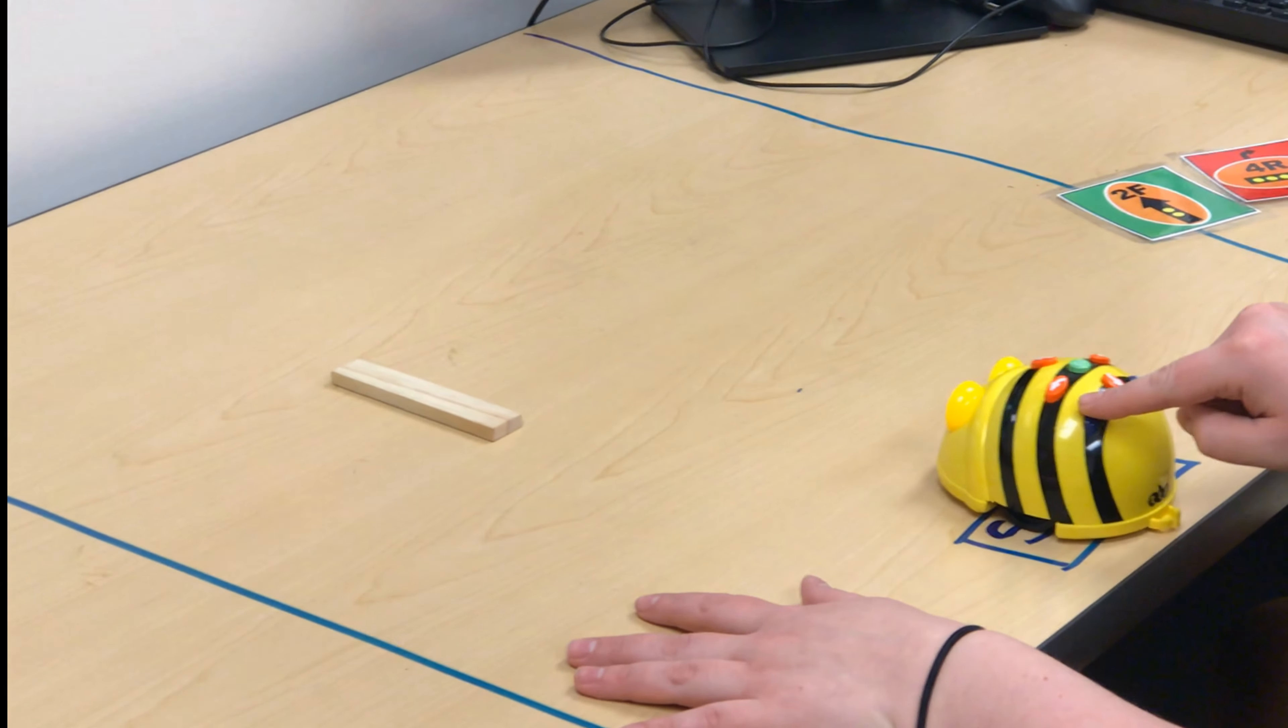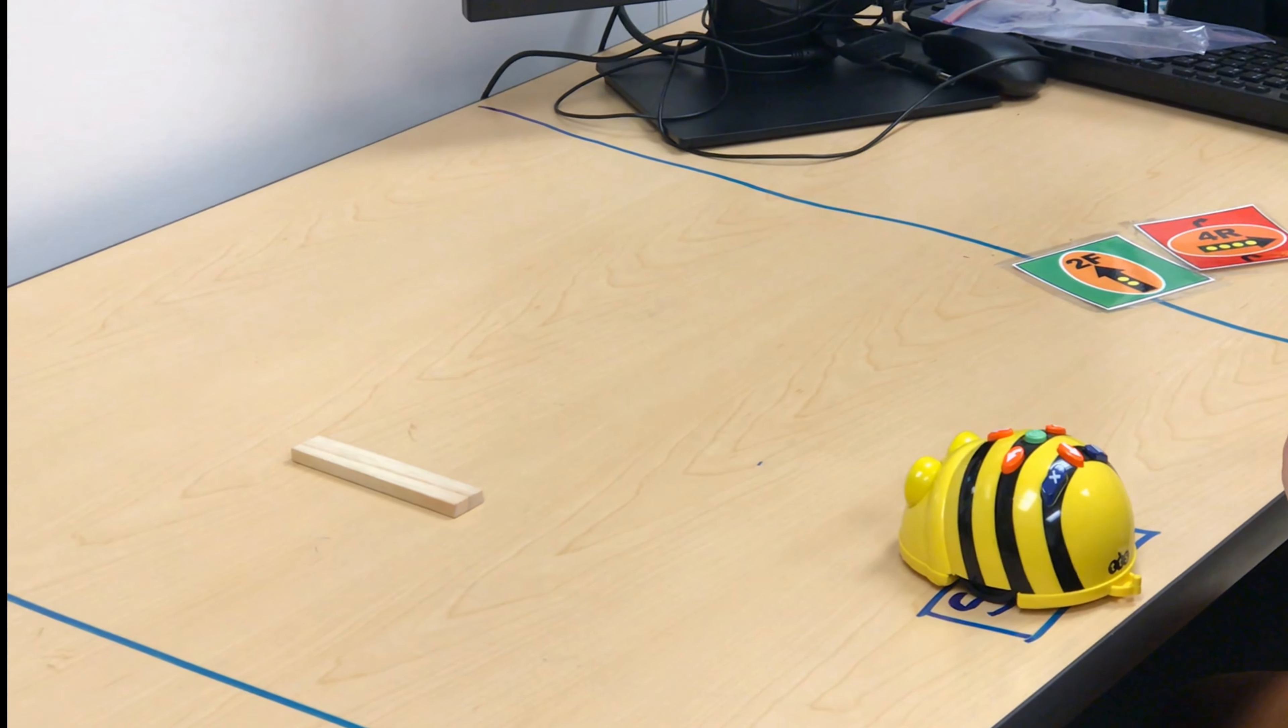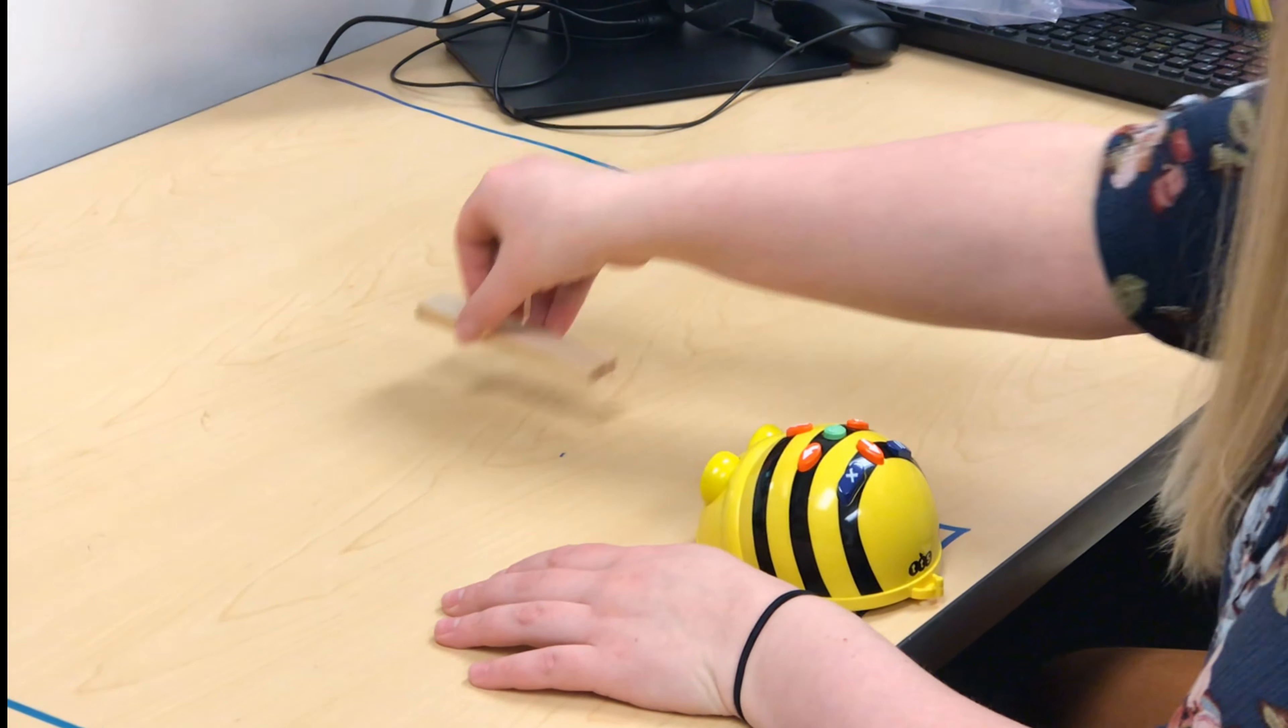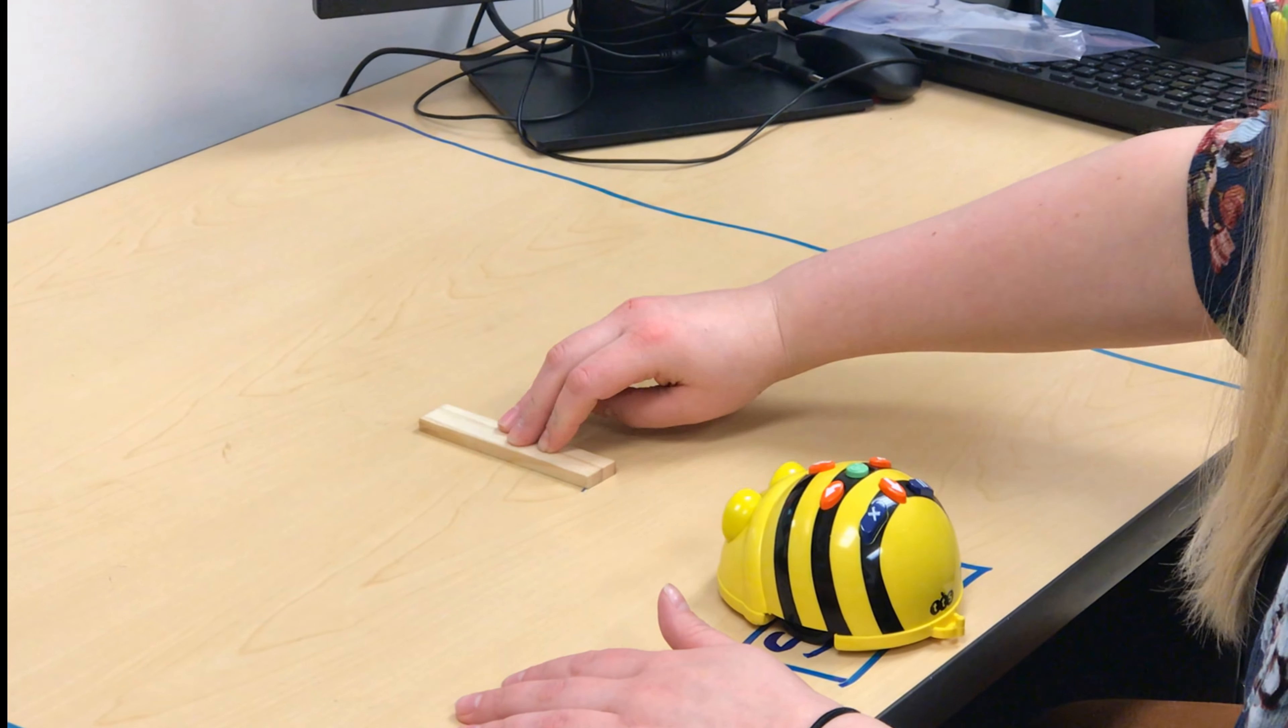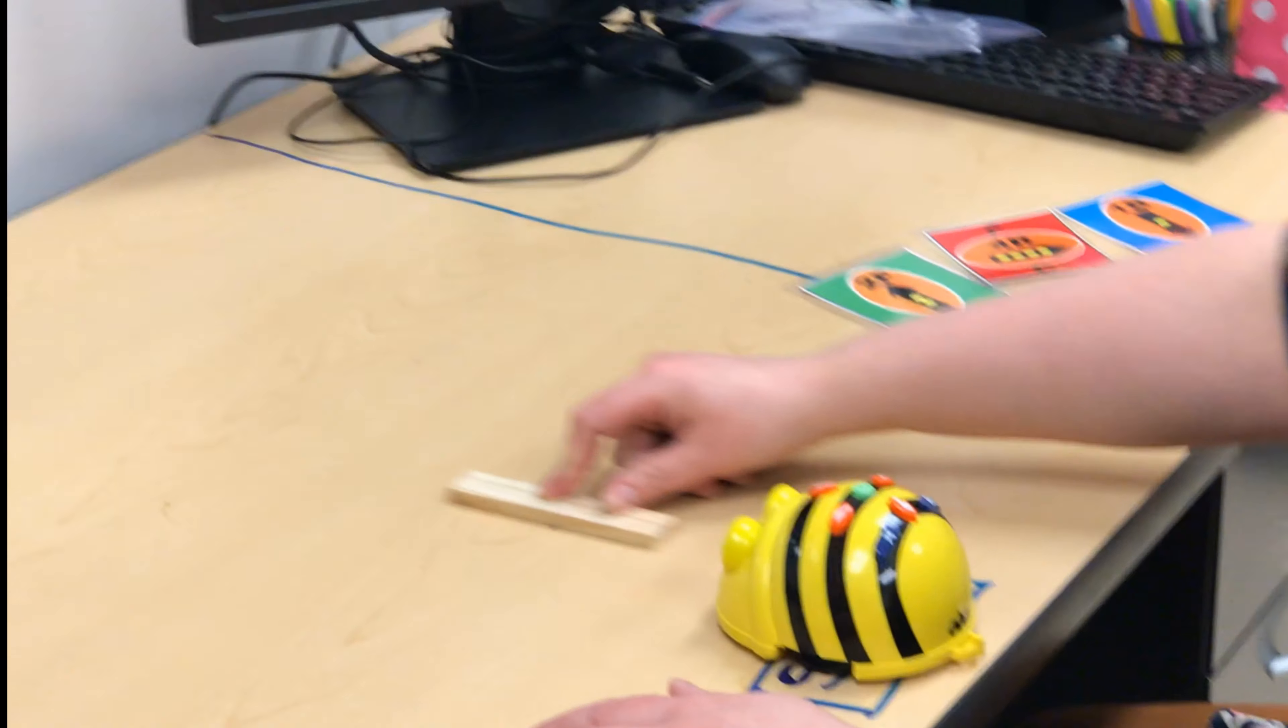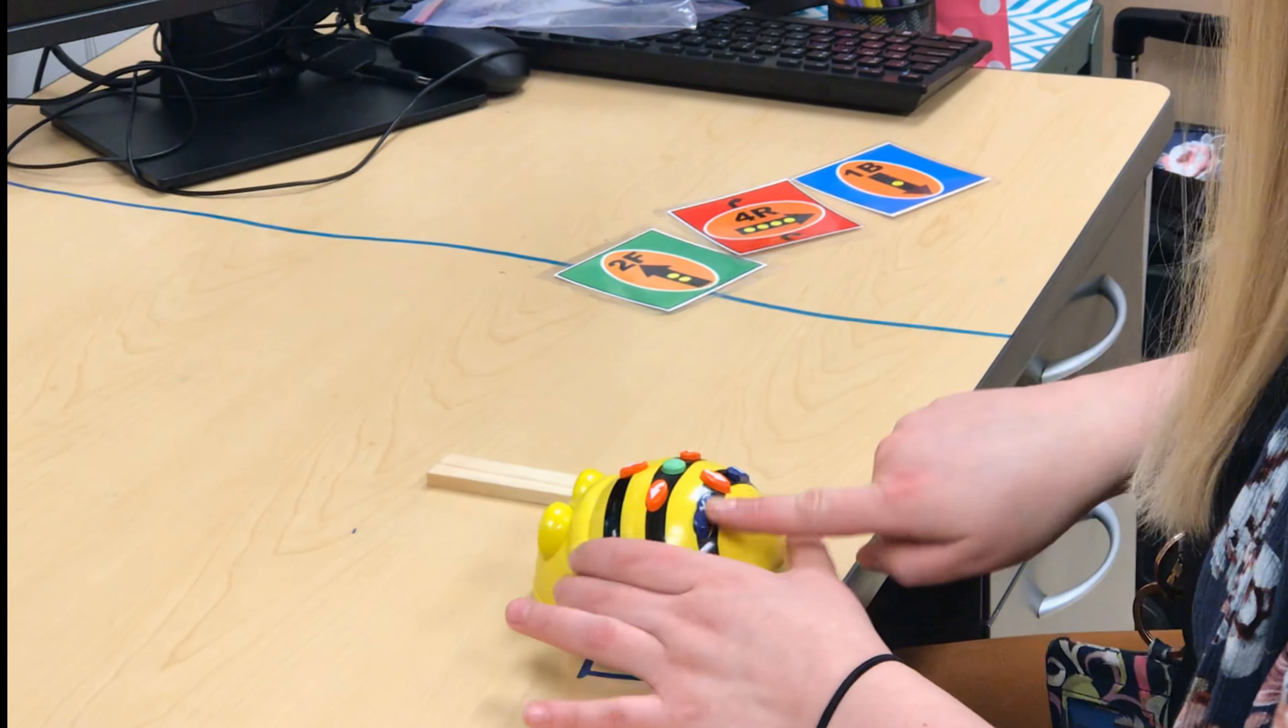I'm going to clear my Bee-Bot. I'm going to swap one card out. Now I have my new code. I'm going to make a prediction: forward twice, one, two. I'm going to use my finish line to kind of measure four right: one, two, three, four. Then back one. I think my Bee-Bot is going to end right here. Start with clear.